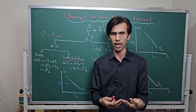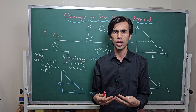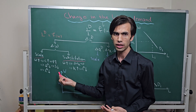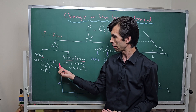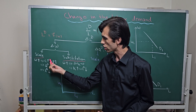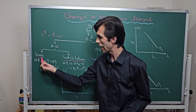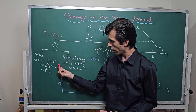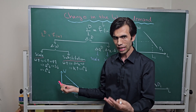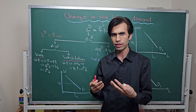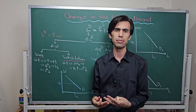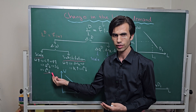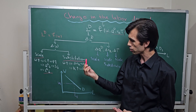When demand for the final output decreases, the firm will react by reducing the level of supply — reducing the scale of the output. As a result, when the supply of output decreases, the company now needs less labor and also fewer other factors of production. So the labor demand will decrease. This is the scale effect.